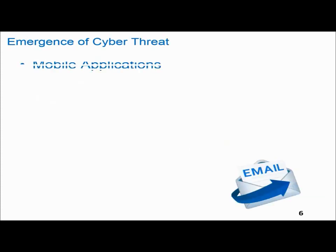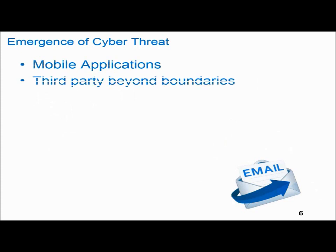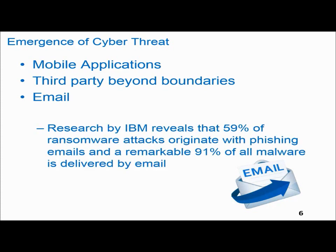The emergence of cyber threats is driven by mobile applications, third-party beyond-boundaries access, and email. A chain is only as strong as its weakest link — IBM research revealed that 59 percent of ransomware attacks originate with phishing emails, and a remarkable 91 percent of all malware is delivered by email. In the entire cyber security chain, the weakest link is email.